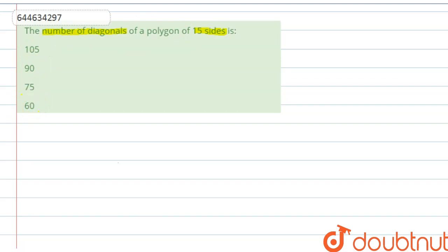So first we will understand the formula to find out the number of diagonals. We will start with n equals 5. n equals 5 means this is a pentagon.